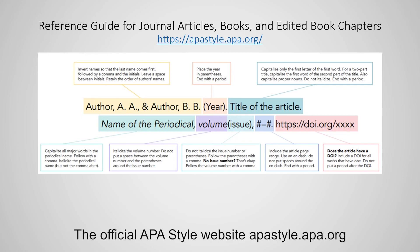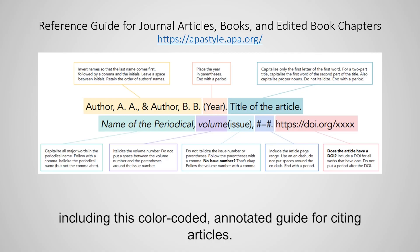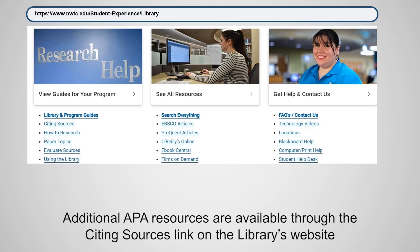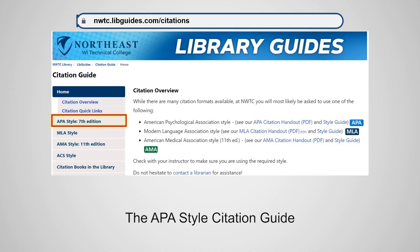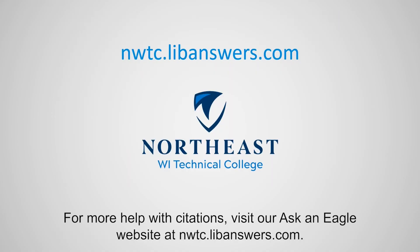The official APA style website, apastyle.apa.org, provides a variety of handouts, checklists, and guides, including a color-coded annotated guide for citing articles. Additional APA resources are available through the citing sources link on the library's website. The APA style citation guide includes examples of how to cite a variety of sources. For more help with citations, visit our Ask an Eagle website at nwtc.libanswers.com.